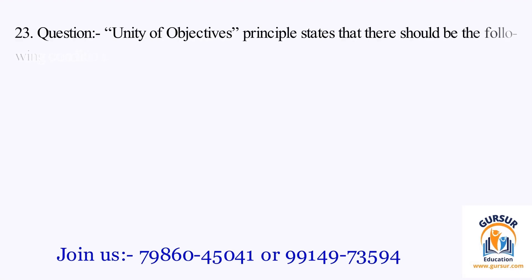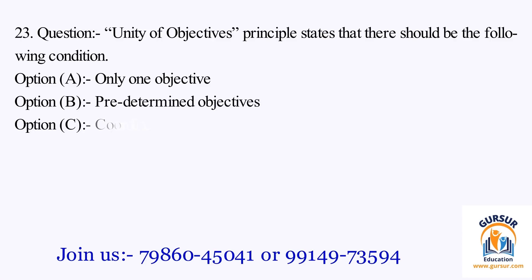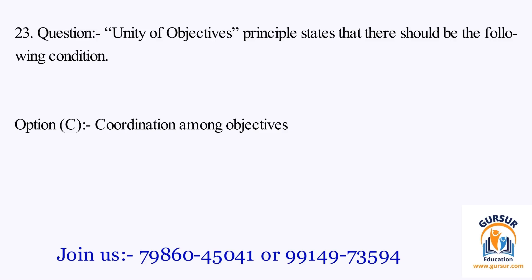Question number 23. Unity of objectives principle states that there should be: Option A: only one objective. Option B: predetermined objectives. Option C: coordination among objectives. Option D: none of the above. The right answer is Option C, that is coordination among objectives.